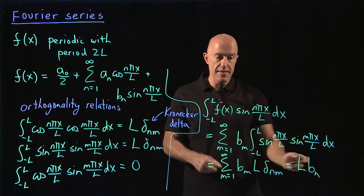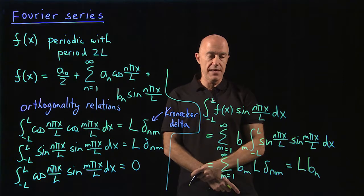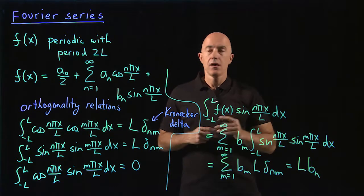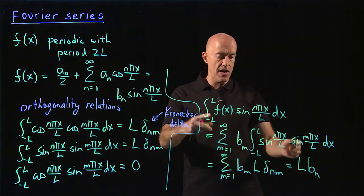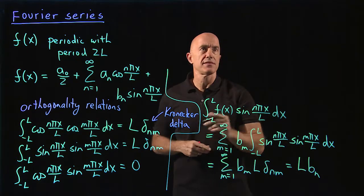And then we can solve that for bn. So that's how you find the b's. You get the a's the same way.